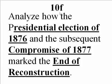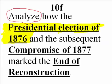Let's look at Standard 10, Substandard F. This is going to be the last video of Unit 4 and the completion of Standard 10 substandards. It says: analyze how the presidential election of 1876 and the subsequent Compromise of 1877 mark the end of Reconstruction. We have to analyze — in other words, dig deeper than what's on the surface — at why this presidential election of 1876 results in the end of the Reconstruction period.